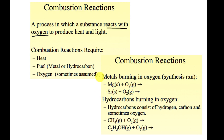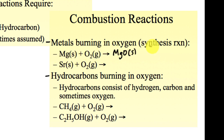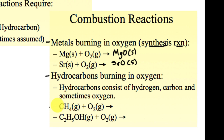The two types of combustion we see are metals reacting with oxygen and hydrocarbons reacting with oxygen. For example, magnesium solid reacted with oxygen produces magnesium oxide. This can also be considered a synthesis reaction since we are creating compounds, but these reactions also give off heat and light.